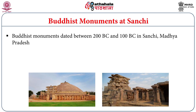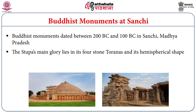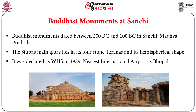Buddhist Monuments at Sanchi represents Buddhist culture and dates back to between 200 BC and 100 BC in Sanchi, Madhya Pradesh. The Stupa's main glory lies in its four stone Toranas and its hemispherical shape. This particular site was declared as a World Heritage Site in the year 1989. It is very close to the international airport of Bhopal, and is visited by many Buddhist tourists especially from South and Southeast Asia, as well as many international tourists.